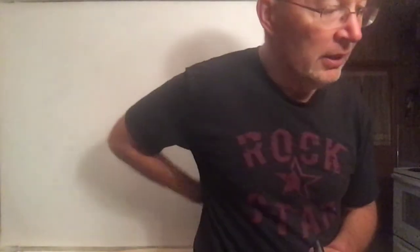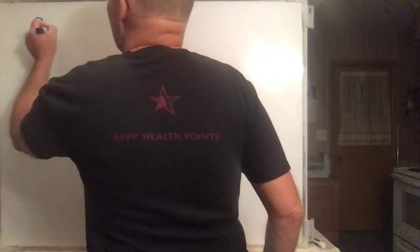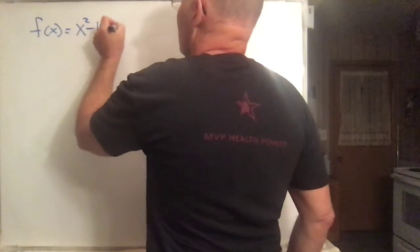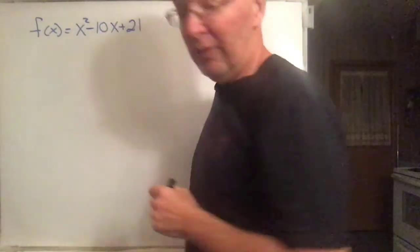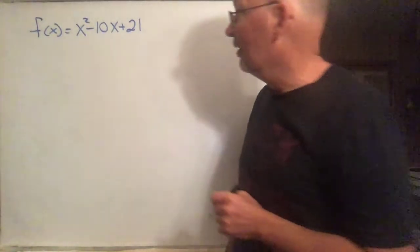Let's continue with the Math 120 midterm practice problems. Number 31 says find the x-intercepts of x-squared minus 10x plus 21. So that's the graph and we're supposed to find the x-intercepts.